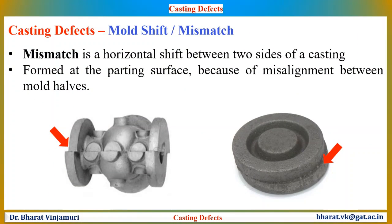Another effect of improper closing of the mould cavity is mismatch or mould shift, where the parts are aligned but shift across the parting plane. Mismatch is a horizontal shift between the sides of the casting, formed at the parting surface mainly due to misalignment between the mould halves. Some causes include loose box pins, inaccurate pattern pins, or carelessness in placing the cope on the drag. If you are experiencing a shift, try using a match plate pattern, check alignment, and make sure to use proper moulding box and closing pins.